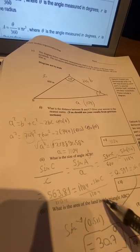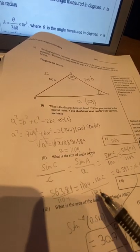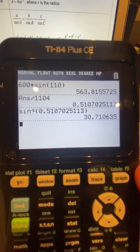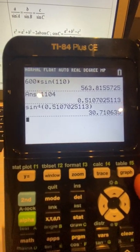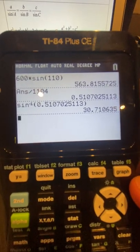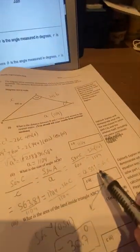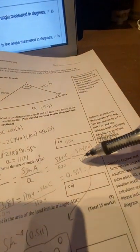We're going to divide both sides by 1104 to cancel the number. And if we divide 563.81 by 1104, we're going to get 0.5107, or 0.511, which is equal to sine of C.